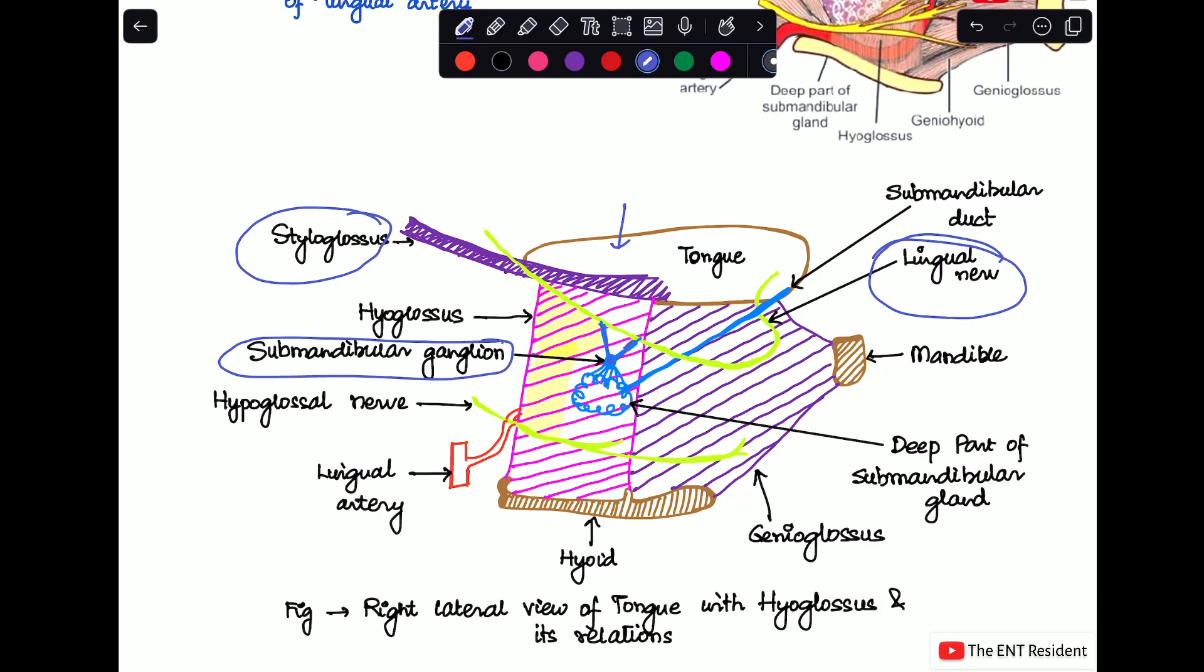The next structure will be the deep part of the submandibular gland and the submandibular duct. Next structure is the hypoglossal nerve, which is the nerve supply for most of the muscles of the tongue except for palatoglossus. And last part is the lingual artery. So you can see these are the lateral relations of the hyoglossus if you had to go from above downwards, which lies in between the hyoglossus and the myelohyoid muscle.